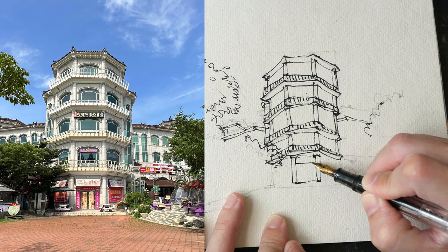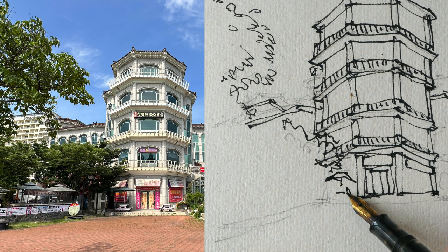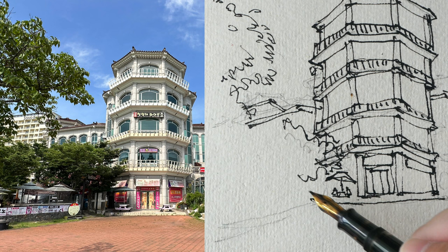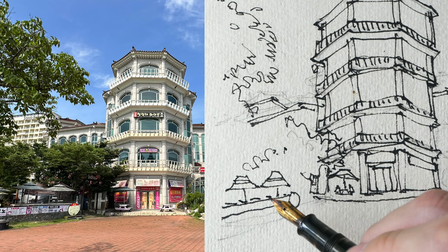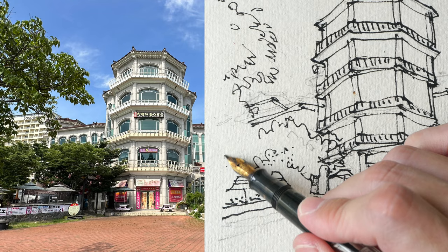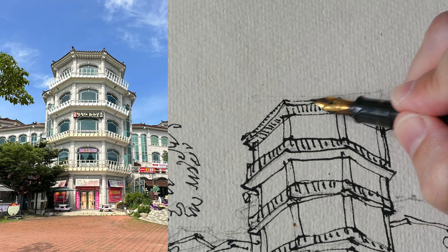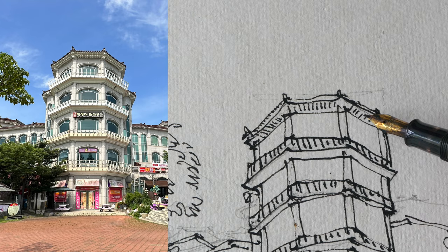Once you have drawn the big shapes, it's much easier to fill in the smaller shapes. I've added some people sitting on benches in front of the building, even though there are actually no people there. It's good to add people in your scene even if there are none because they make your sketch look more lively. Also, when you have people in the scene, they give you a sense of scale — you'll know exactly how big the building is behind them.